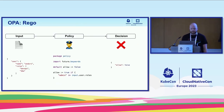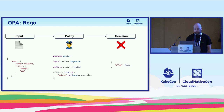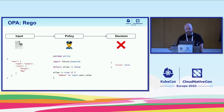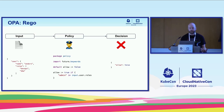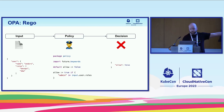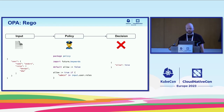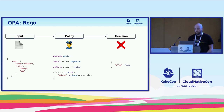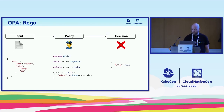A simplified example: we have some input JSON — a user, a name, and a couple of roles. The Rego policy says by default the allow rule should be false, so we don't allow anyone by default. But allow should be true if there is an admin role in the input user's roles. In this case there is no admin role, so the decision is false. That's a simplified view of how OPA and Rego work.